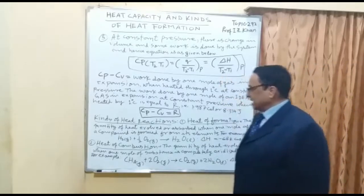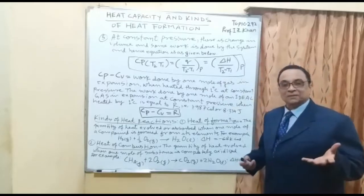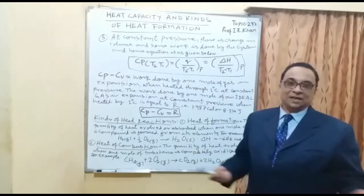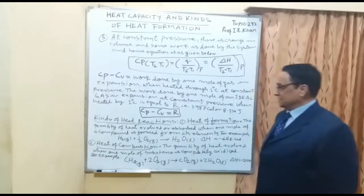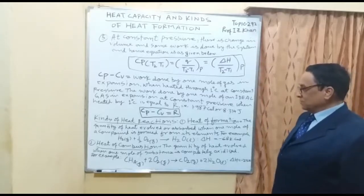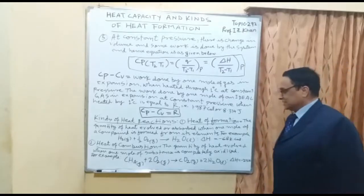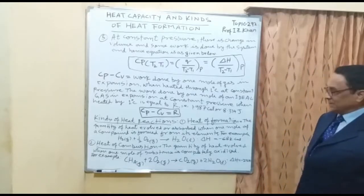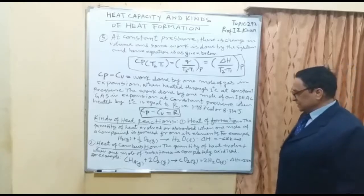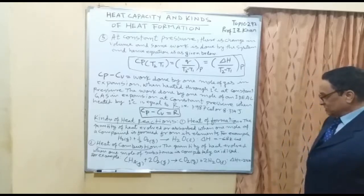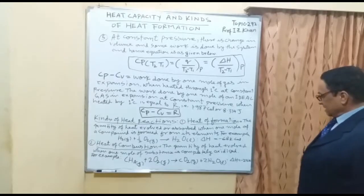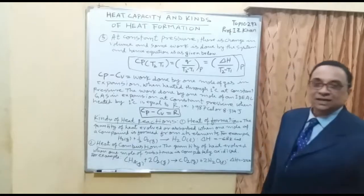Number two is heat of combustion: the quantity of heat evolved when one mole of a substance is completely oxidized — burned in the presence of oxygen. For example, methane gas CH₄ plus oxygen, both in gaseous form, gives carbon dioxide gas plus water in liquid form. Delta H equals minus 213 kilocalories.